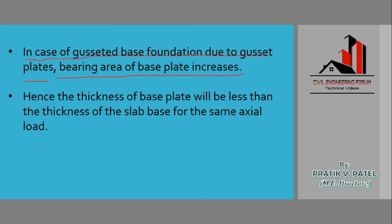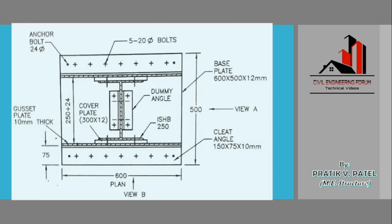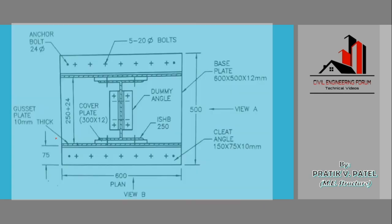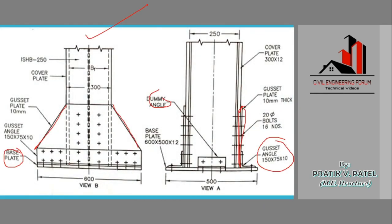Hence the thickness of the base plate will be less than the thickness of the slab base for the same axial load. This means the concrete block provided below the gazette plate has more thickness than that of the base plate.